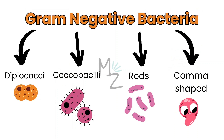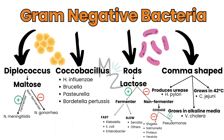Gram-negative bacteria are also classified based on different shapes: diplococci, coccobacilli, rods, and comma-shaped. Diplococci are subdivided based on maltose fermentation — if it ferments maltose, it's Neisseria meningitidis; if it doesn't, it's Neisseria gonorrhoeae. Coccobacilli include Hemophilus influenzae, Brucella, Pasteurella, and Bordetella Pertussis. Rods are subdivided based on lactose fermentation — fast fermenters include Klebsiella, E. coli, Enterobacter; slow ones include Serratia. Non-lactose fermenters are oxidase positive like Pseudomonas, or oxidase negative like Shigella, Salmonella, Proteus, and Yersinia.